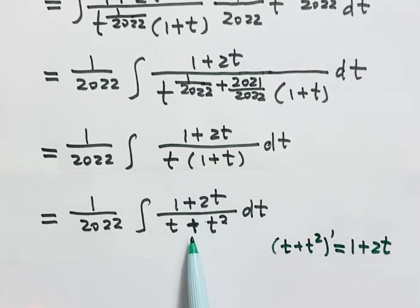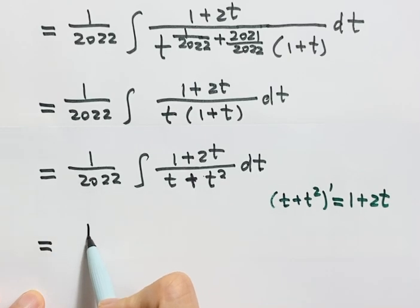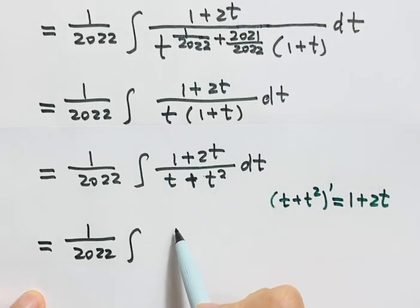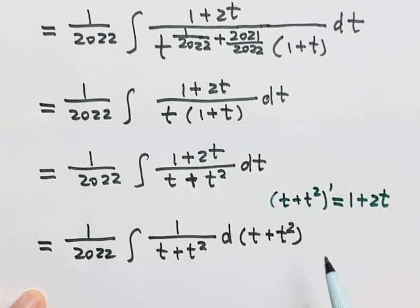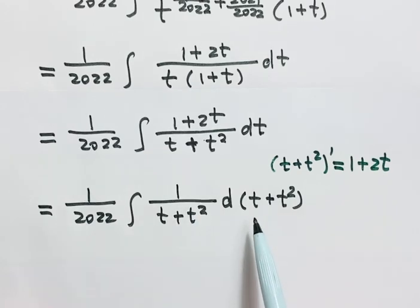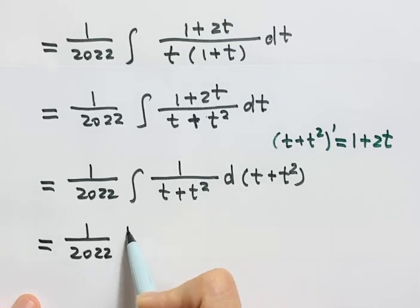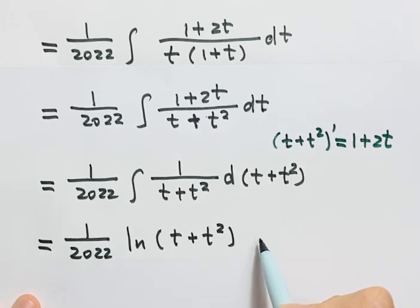So the numerator is the derivative of the denominator. We can combine these together. We have (1 plus 2t) over (t plus t squared). If we treat t plus t squared as u, then we have the integral of 1 over u du, which is just log u — so log of t plus t squared, plus constant C.